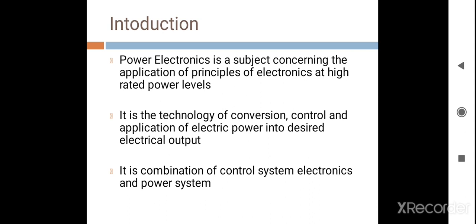When we study the Power Electronics subject, the first question that arises in our mind is: what is Power Electronics? Power Electronics is a subject concerning the application of electronics at high rated power level. Here, the high rated power level means a high level of voltage and high level of current. So, in Power Electronics, all Power Semiconductor Devices have high rated voltage and high rated current. Basically, Power Electronics is the technology of conversion, control, and application of electric power into desired electrical output.